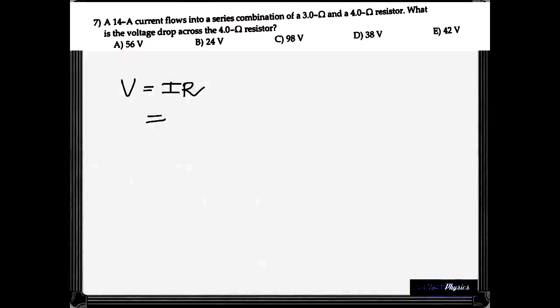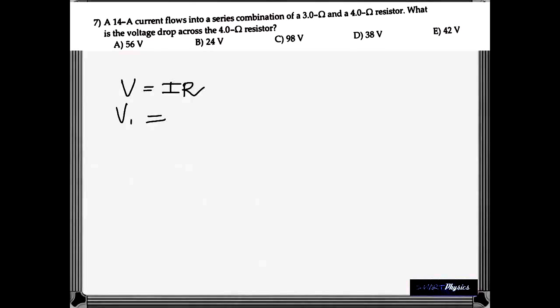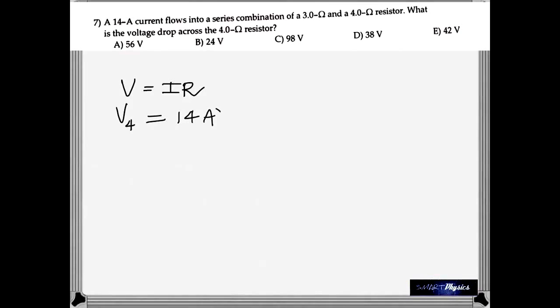This is again a straightforward question. The 14 ampere current flowing into a series combination of 3 and 4 ohm resistors. What's the voltage drop? The voltage drop is just the product of the current flowing and the resistance. In this case, the current through both are the same. It's 14 ampere times 4 gives you 56 volt.